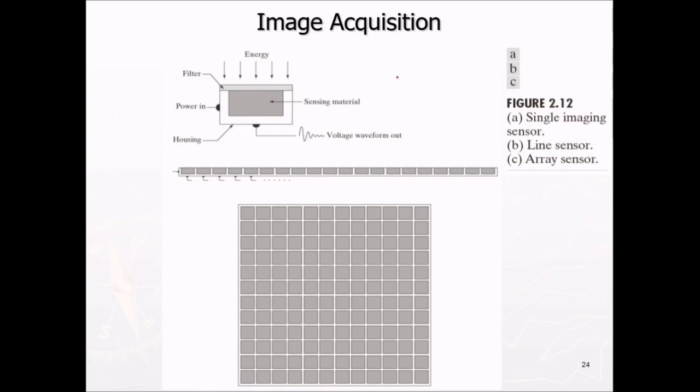This is how image acquisition is done. This is actually a single imaging sensor. This is a line sensor and this is an array sensor. So everywhere you have imaging devices. Imaging means CCD or cameras. This is a sensing material. And this is various parts like voltages, housing, power-in filter. This is the input energy and how it captures the light. This transforms illumination energy into digital images.